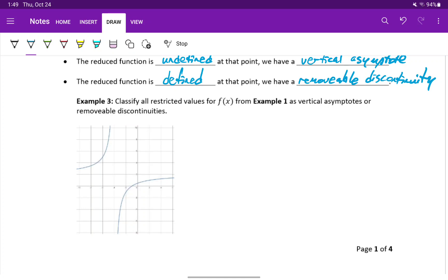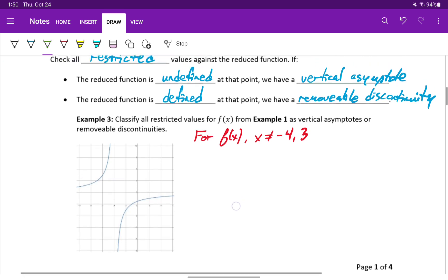Now we can take those two pieces that we've already established and determine in example three if our restricted values for f of x are vertical asymptotes or removable discontinuities. So we already found that for f of x, x cannot equal negative four or three.